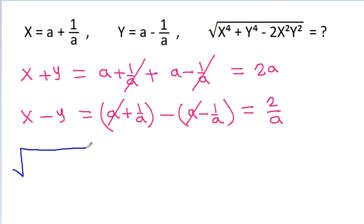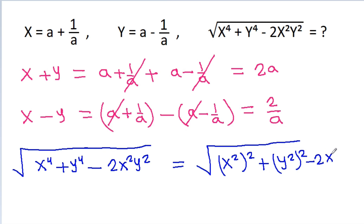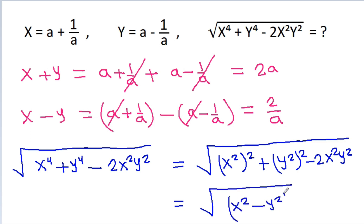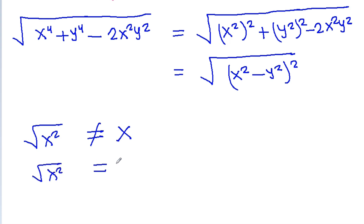So, the square root of x power 4 plus y power 4 minus 2x square y square is equal to the square root of x square squared plus y square squared minus 2x square y square, and it is the square root of x square minus y square, one square. And the square root of x square is not equal to x, it is equal to mod x.